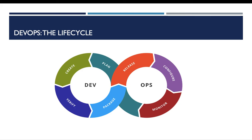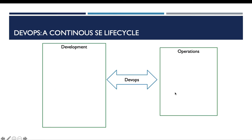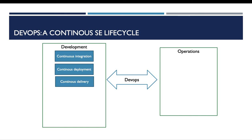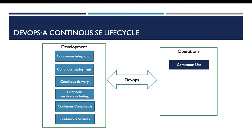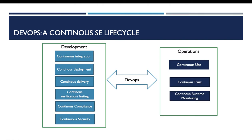Let's see now the different continuous activities of the development and operations phases. For the development phase, it includes continuous integration, continuous deployment, continuous delivery — which are very commonly known — but also continuous verification and testing activities, continuous security, and continuous compliance. For operations, the operation phase includes continuous use, continuous trust, and continuous runtime monitoring. We will now go into detail on those continuous activities.